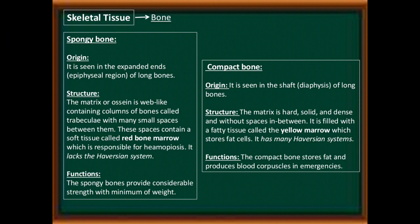There are two types of bones: spongy bone and compact bone. Spongy bone is seen in the expanded ends (epiphyseal region) of long bones. Its matrix (ossein) is wave-like, containing columns called trabeculae with many small spaces between them filled with red bone marrow, responsible for hemopoiesis. It lacks the Haversian system and provides considerable strength with minimum weight. Compact bone is seen in the diaphysis of long bones. Its matrix is hard, solid, and dense, filled with fatty tissue called yellow marrow, which stores fat. It has many Haversian systems and stores fat and produces blood corpuscles in emergencies.